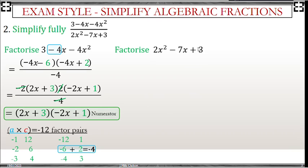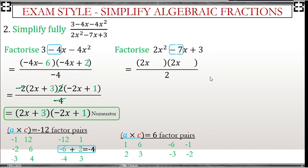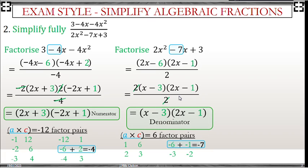For the denominator I lay factor pairs for positive 6 and I choose the right pair to make negative 7. This is negative 6 and 1. I can factor out 2 here and cross out the 2. So this is what I have for my denominator.